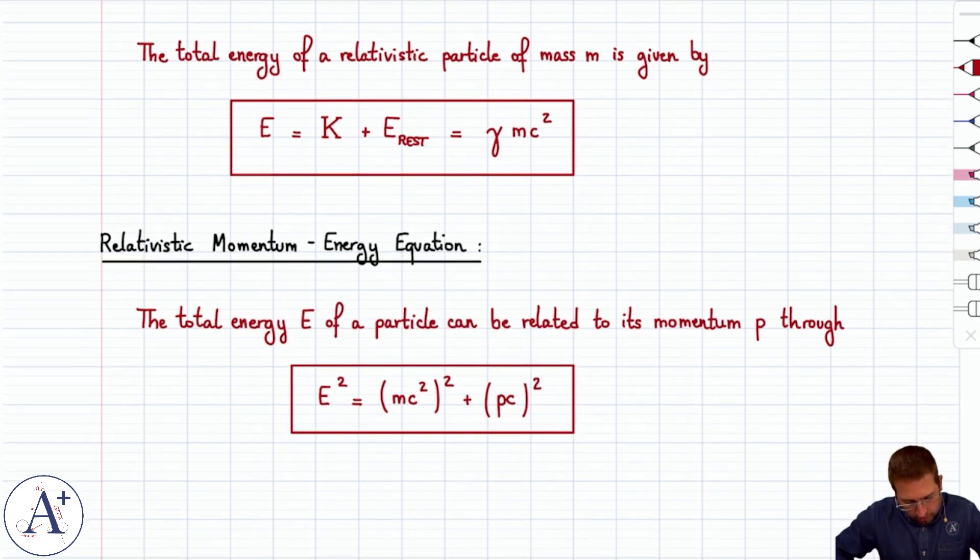And what happens here, it's worth noting, when the mass is zero, which is the case for photons, then you get E equals pc.